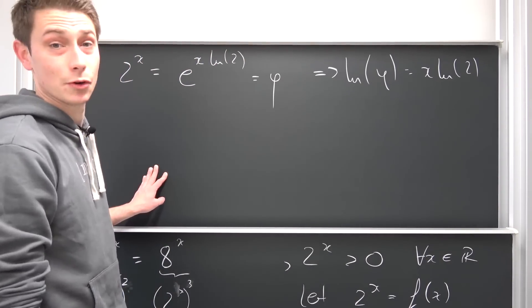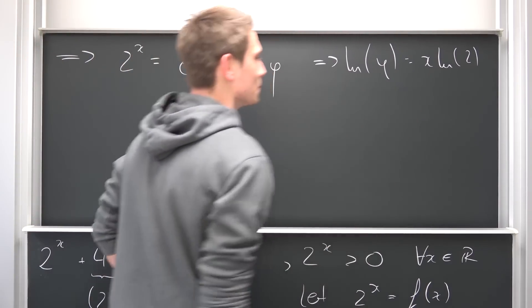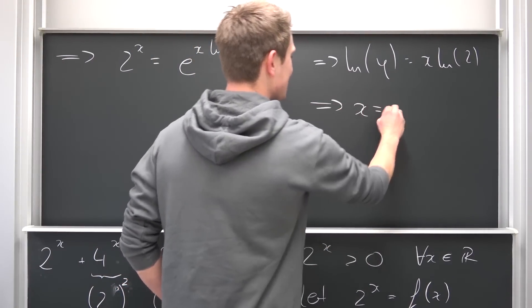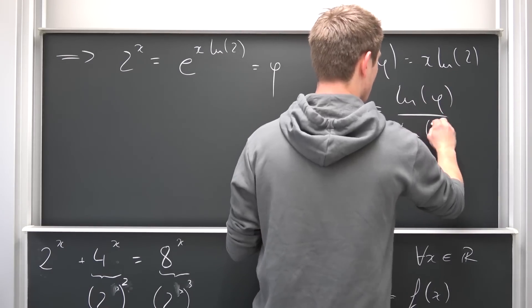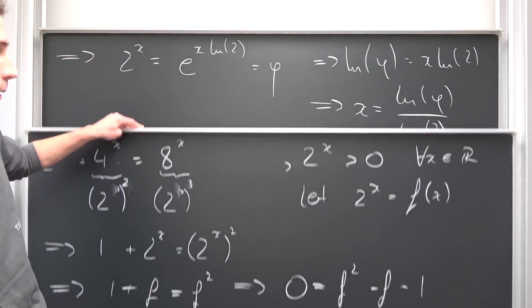And basically to arrive at our solution, we are simply going to divide both sides by natural log of 2 because it's not equal to 0, no, never, because 2 is not equal to 1. Meaning we are going to get that x is nothing other than the natural log of our golden ratio over the natural log of 2. You can actually modify this a bit more because we have the product of something as the argument of our natural log.